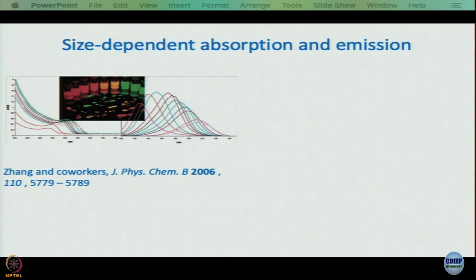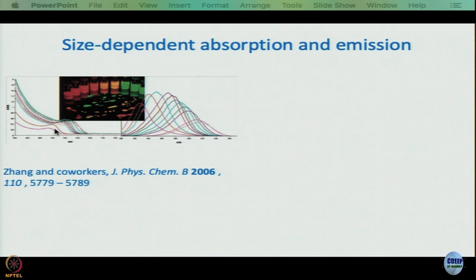It is well known that if one changes the size of the nanoparticle, the color of absorption and emission also changes. This is a common figure whenever anybody does work on semiconductor nanocrystals — a photograph of vials with changing color, where the material is the same but only the size of the particle is different. The absorption spectrum also moves accordingly, as do the emission spectra as size becomes larger or smaller.